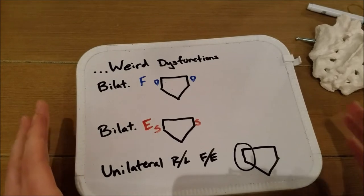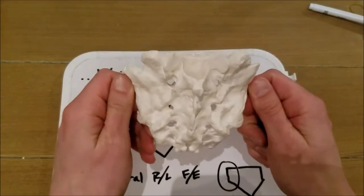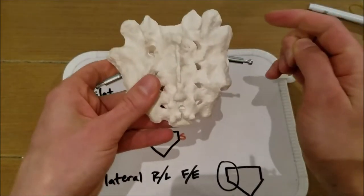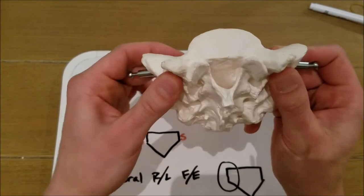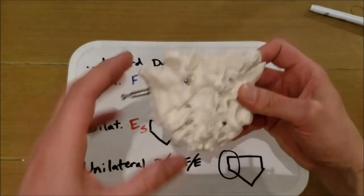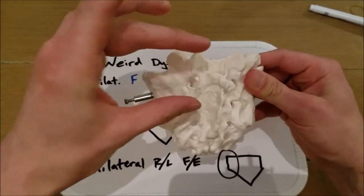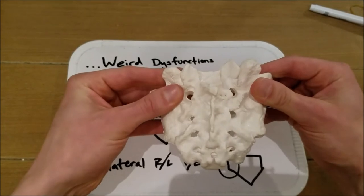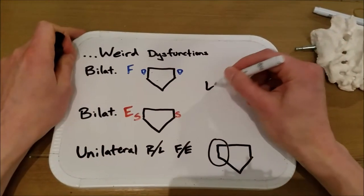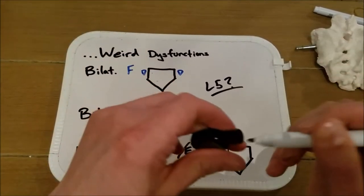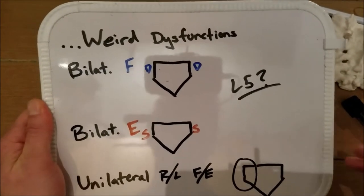Now let's talk about some of the other sacral dysfunctions. A bilateral flexion means the sacral base is bilaterally flexed between the two innominate bones — you have deep sacral sulci bilaterally. Bilateral extension is the exact opposite — both sacral sulci are shallow bilaterally. The unilateral dysfunctions are basically a dysfunction that doesn't fit the other categories — a unilateral flexion or extension will just be one sacral sulcus either flexed or extended on either the right or left side. How L5 fits in with these dysfunctions — don't worry about it, as there's no clear consensus and they're not high yield for COMLEX.